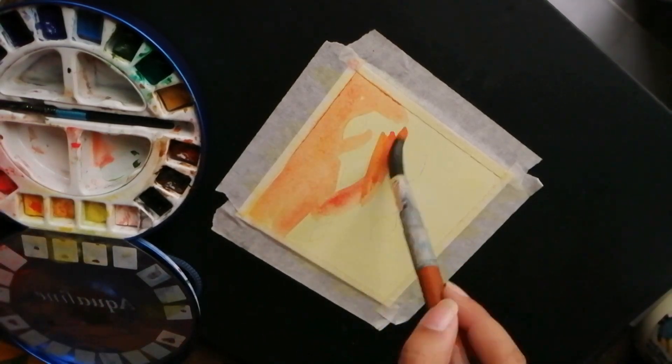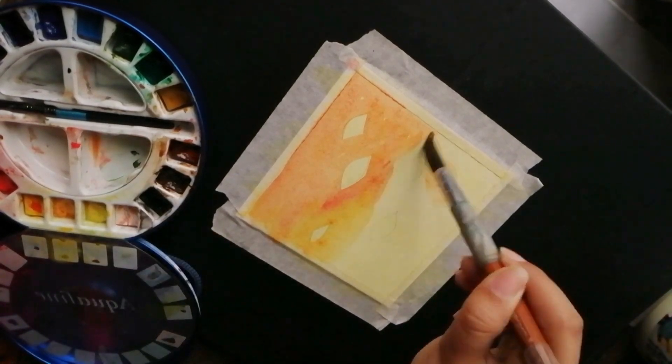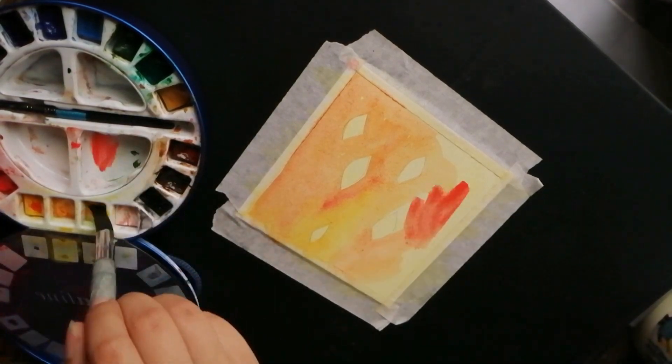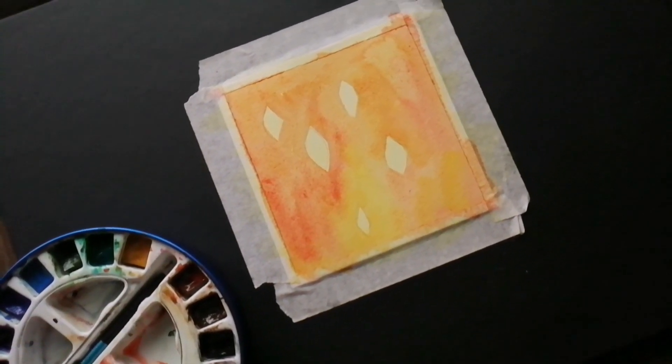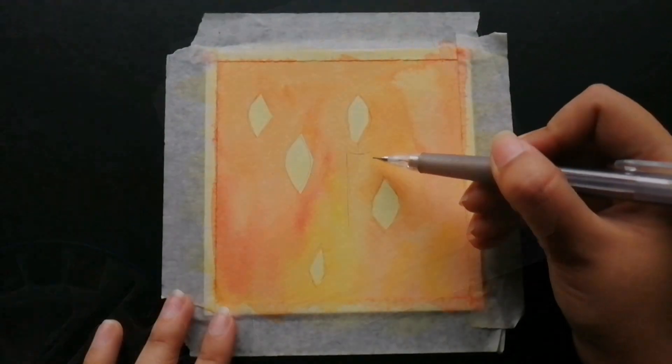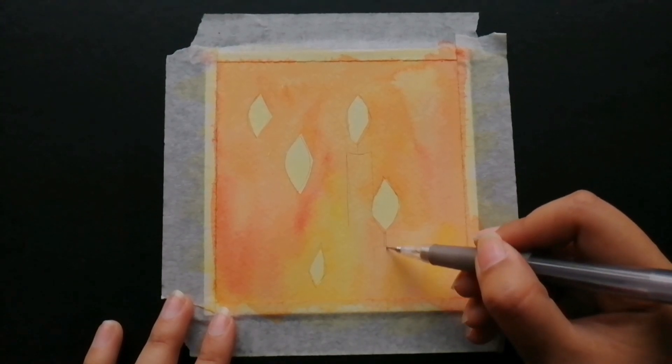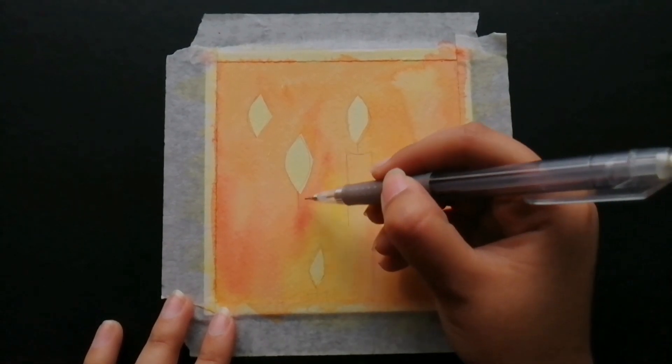Once that layer is dry, you need to draw a few more flames and draw the candlesticks. Drawing the candlesticks is really simple—all you have to do is draw a line coming down from the flame and then a rectangle following it.